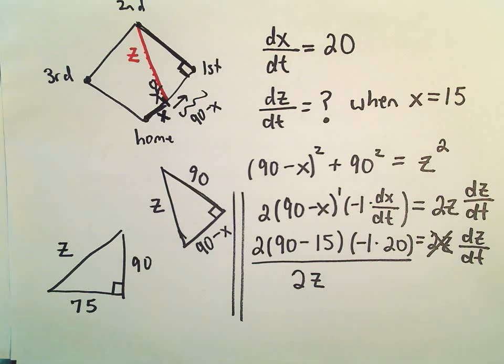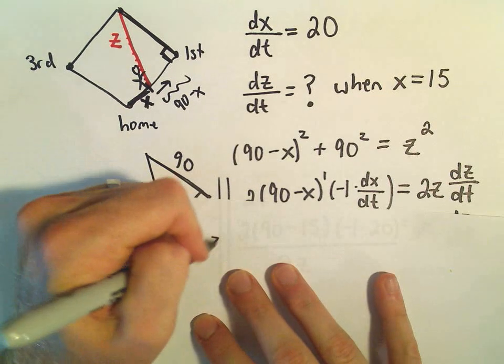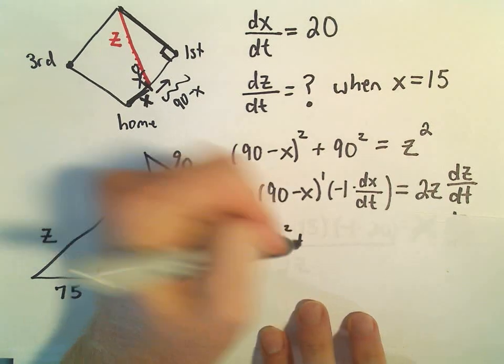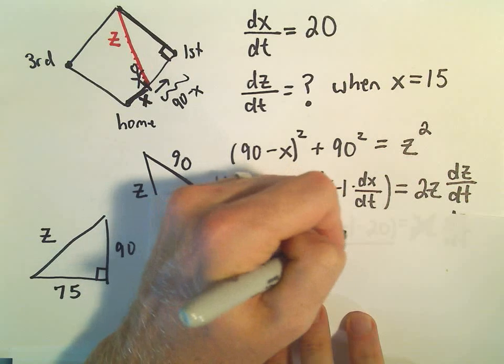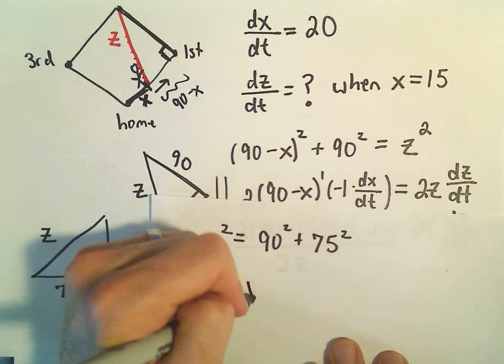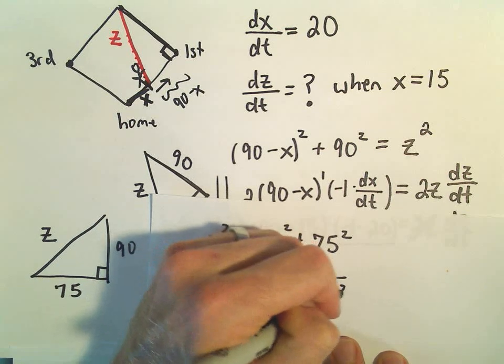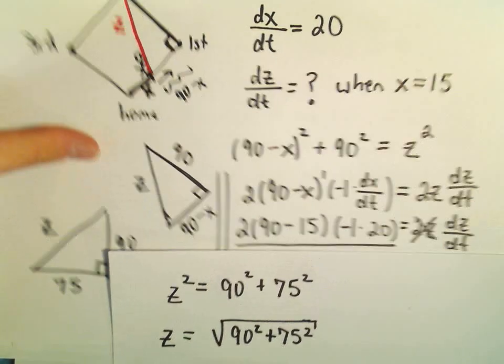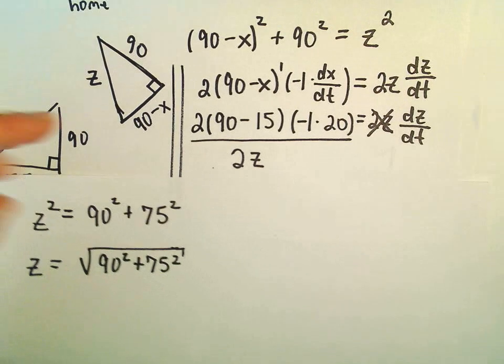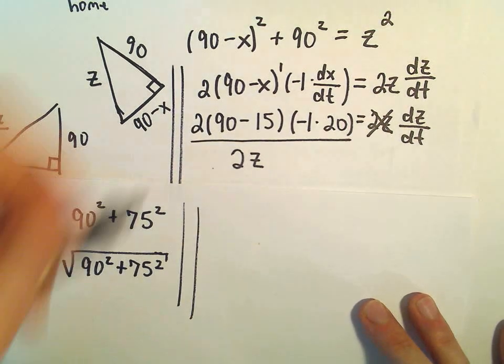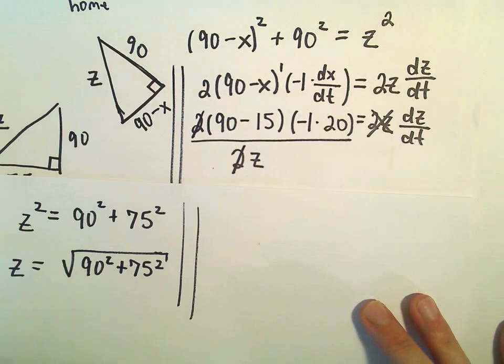So let's see, we would have z squared equals 90 squared plus 75 squared. Or z would be the positive square root of 90 squared plus 75 squared. And now that's just what I'm going to plug into our expression. And then we can just do a little bit of arithmetic to simplify it down.